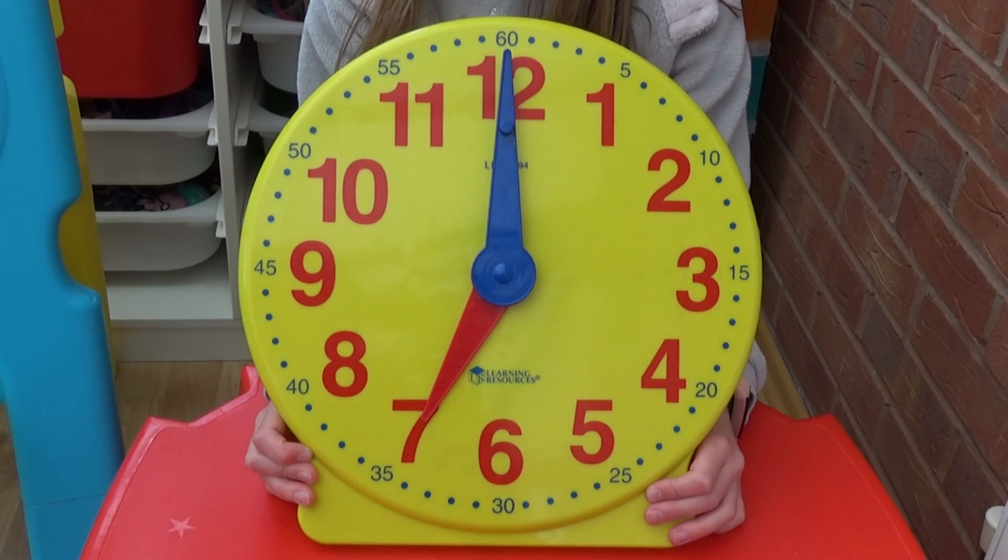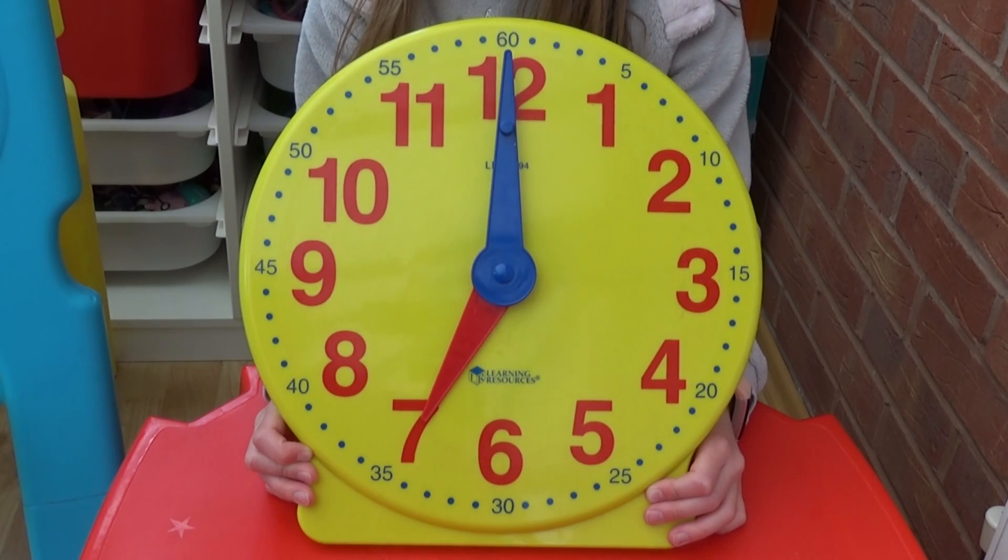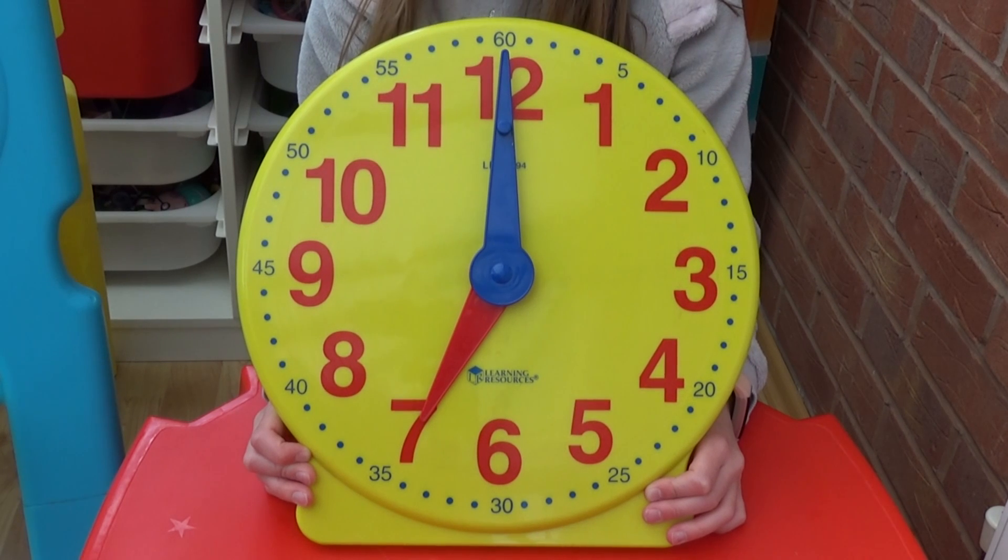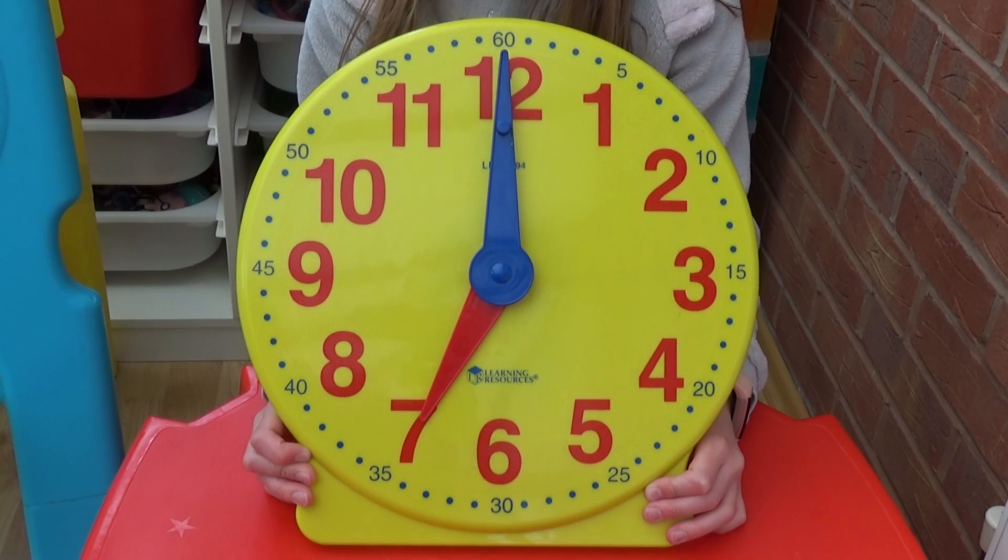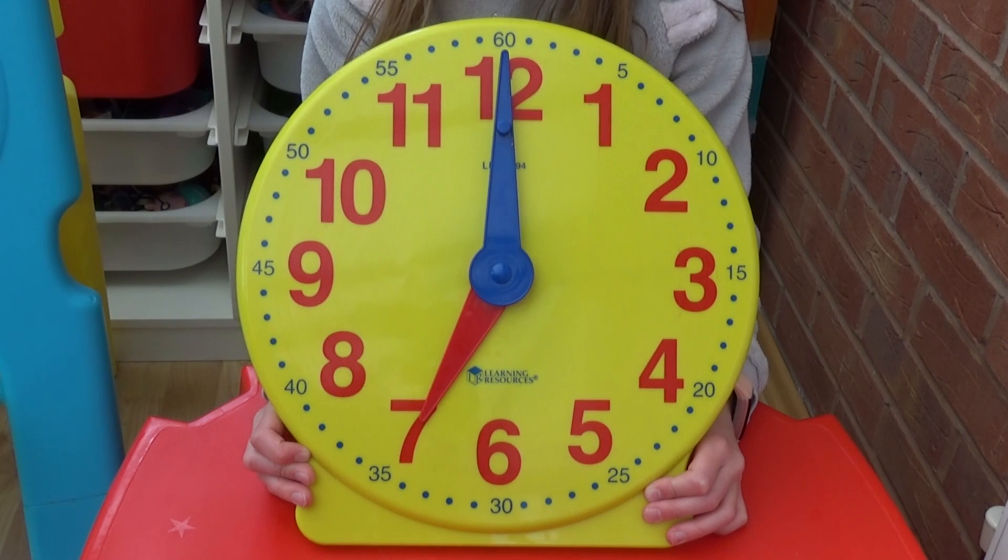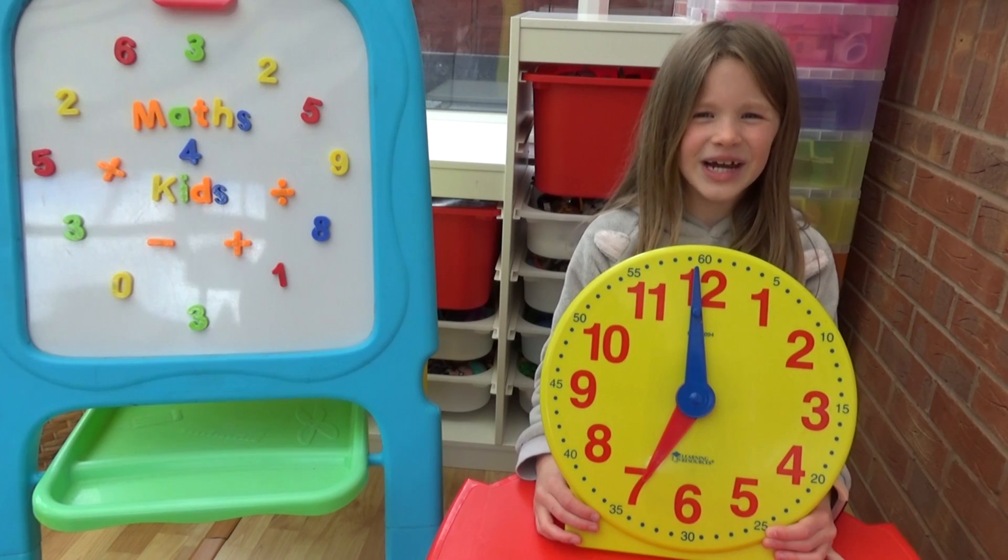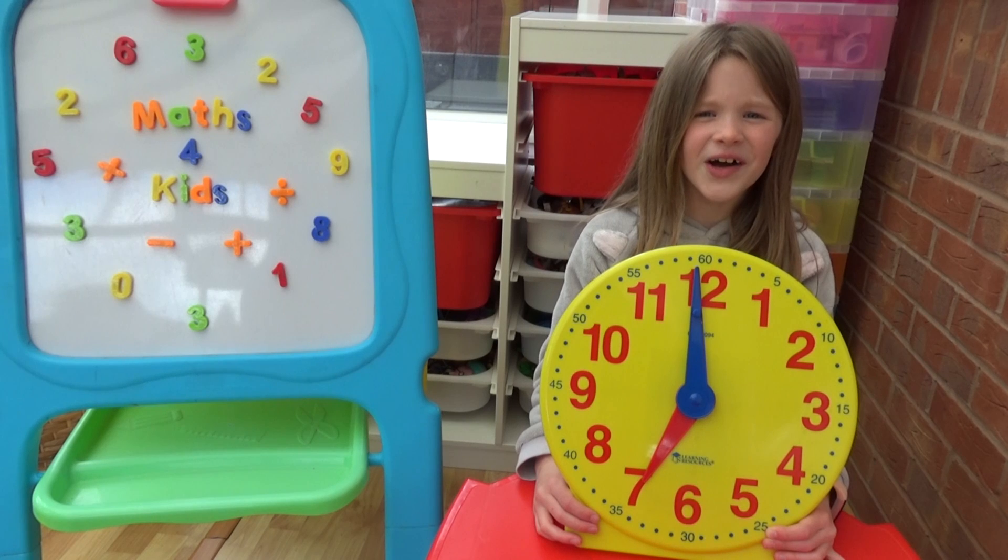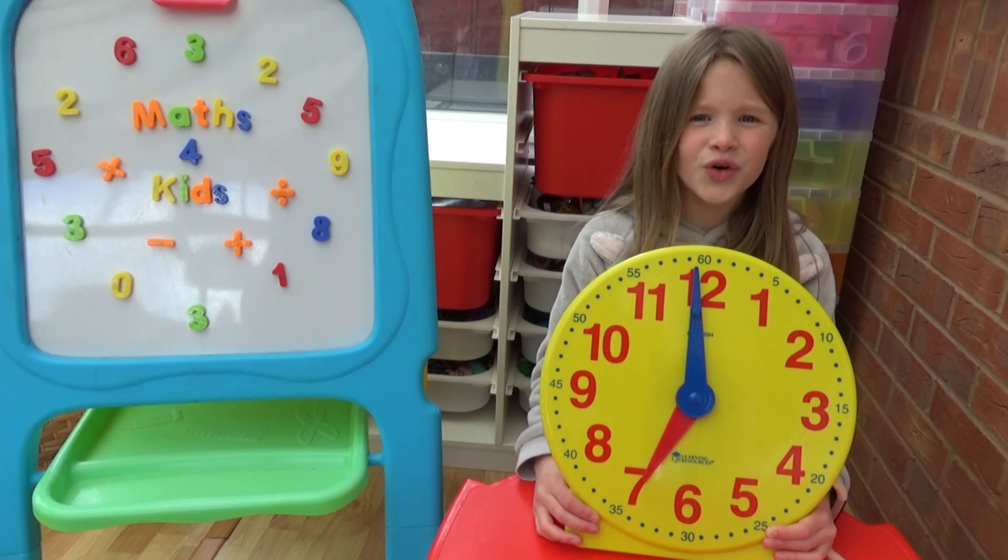First we're going to look at o'clock times, then we're going to look at half pasts. If we look at the clock we can see it has two hands, the short red hand is the hour hand and the long blue hand is the minute hand. For this video we're only going to focus on the hour hand which is the short hand.